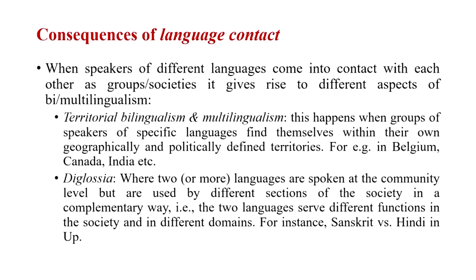Another phenomenon is diglossia, where two or more languages are spoken by the same community at the community level, but these two languages serve different purposes and different sections of the society. For example, in India — predominantly in the northern belt — Hindi is predominantly used to talk to each other. But in a particular religious group, Sanskrit is used for all the rituals of worshipping and other associated rituals. So Sanskrit serves a particular purpose whereas Hindi serves a common everyday way of talking. In this way it can be seen that the two languages coexist in society but complement each other with respect to the function each is playing.